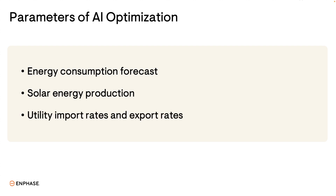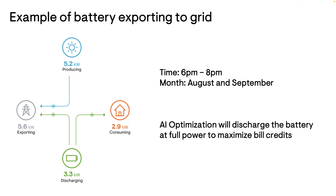For example, in August and September you may observe that the battery is discharging at full power from 6 p.m. to 8 p.m. The end result is the highest possible net savings because the credits earned by exporting energy outweigh the cost of importing energy. AI optimization provides both maximum savings and environmental benefits.